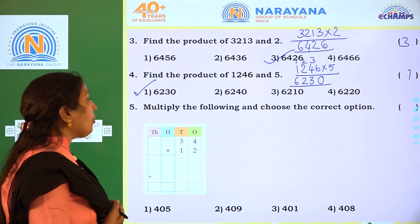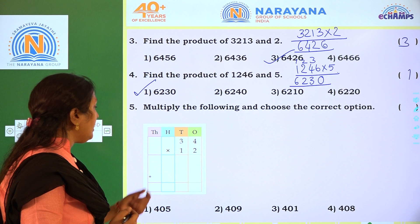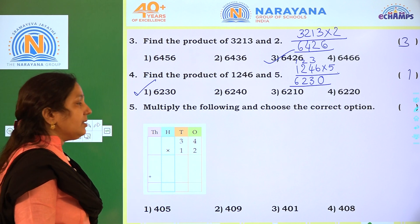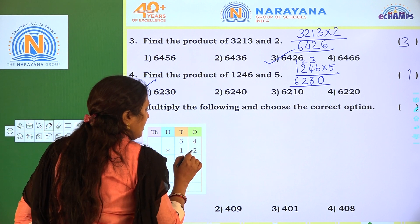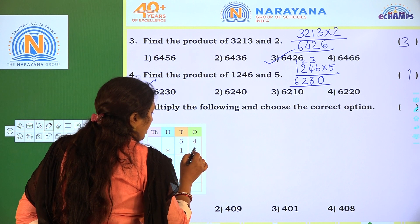Next: multiply the following and choose the correct option. The given one is 34 into 12. First multiply the 1's place number — the 1's place number is 2.